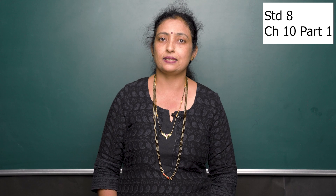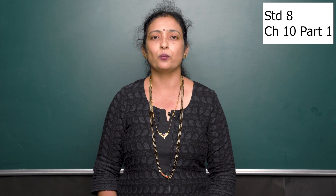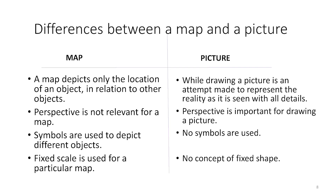Is a map the same as a picture? No. A map depicts only the location of an object in relation to other objects, while a picture is an attempt to represent reality as it is seen with all details. In a map, perspective is not relevant, but in a picture, perspective is important. Symbols are used to depict objects in a map, but no symbols are used in a picture. A fixed scale is used for a map, but there is no concept of a fixed scale in a picture.